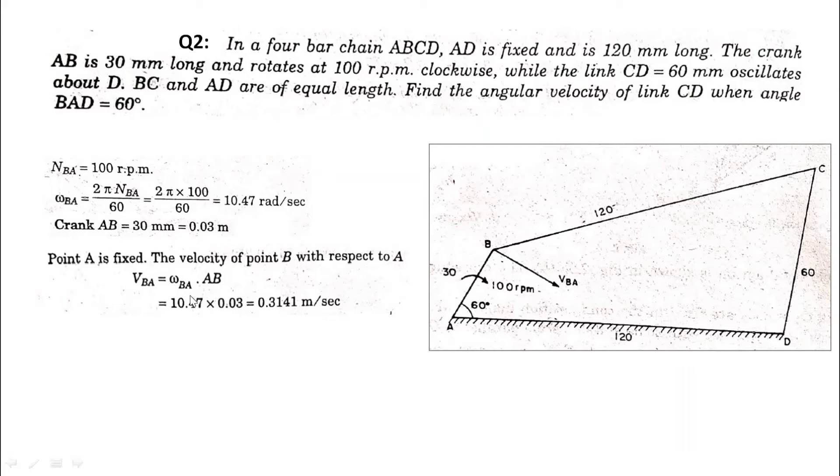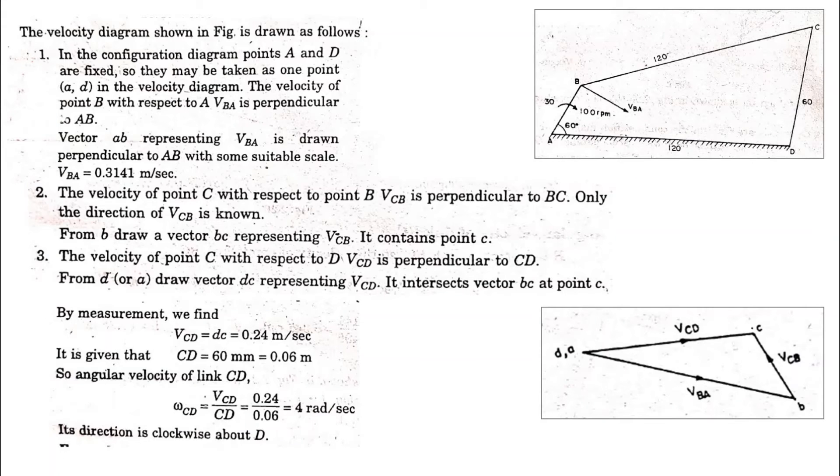v is equal to r omega, so omega we already have in radians per second. We have the link length, so substituting all these values we get vba. This line vba is perpendicular to ab. We can call point A fixed, like this is shown in this velocity diagram.